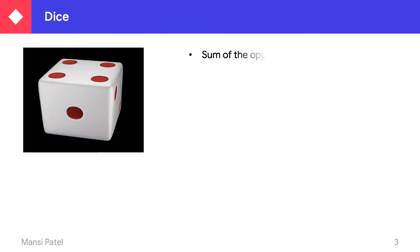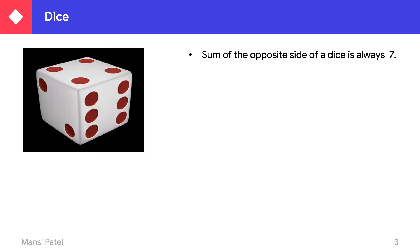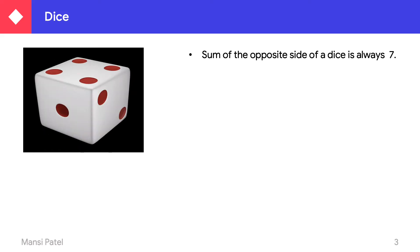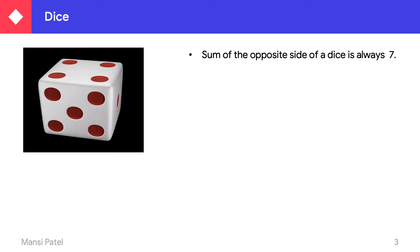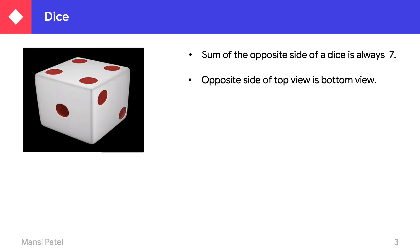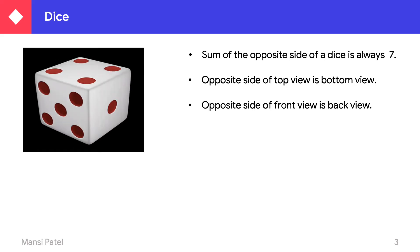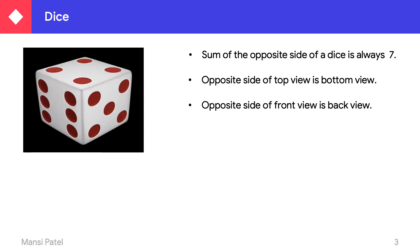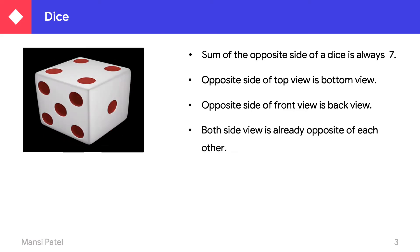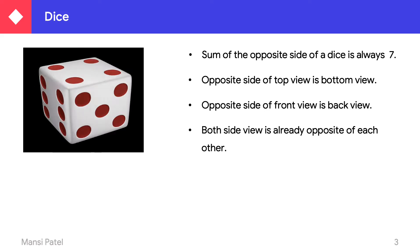Now let us see this dice. The sum of the opposite sides of a dice is always seven. You can see here: if the upper face of the dice shows one and the bottom shows six, the sum is seven. So the opposite side of the top view is the bottom view — top view and bottom view are opposite sides. Similarly, the opposite side of the front view is the back view, and both side views are already opposite to each other.